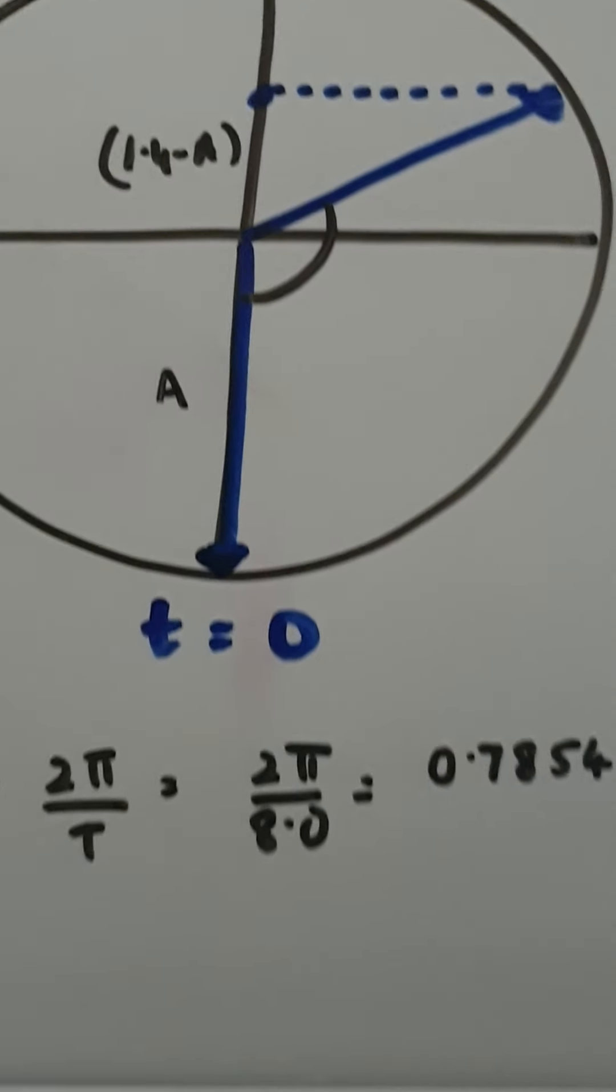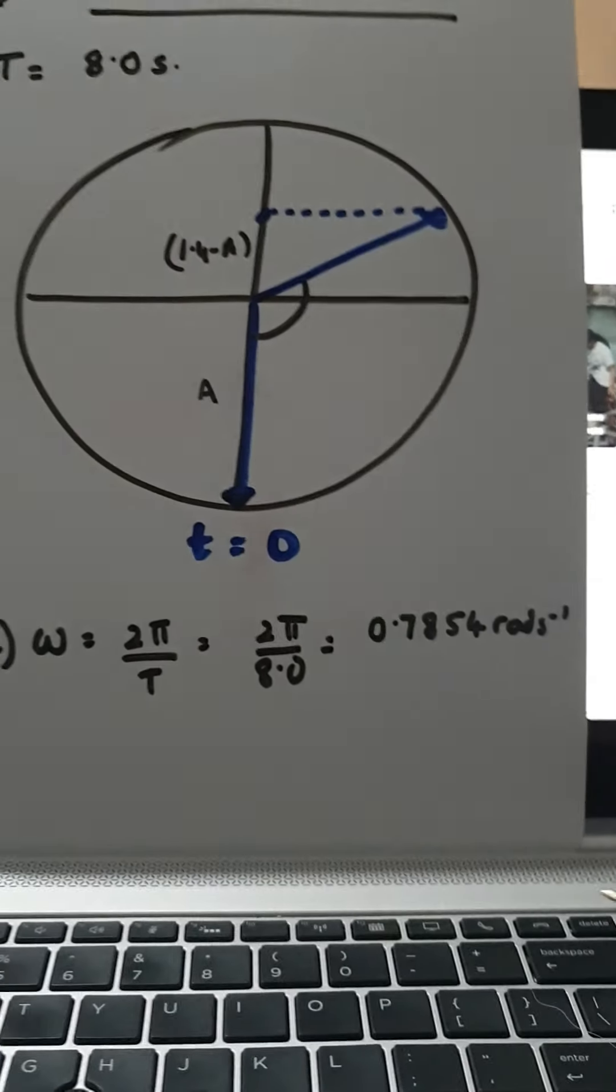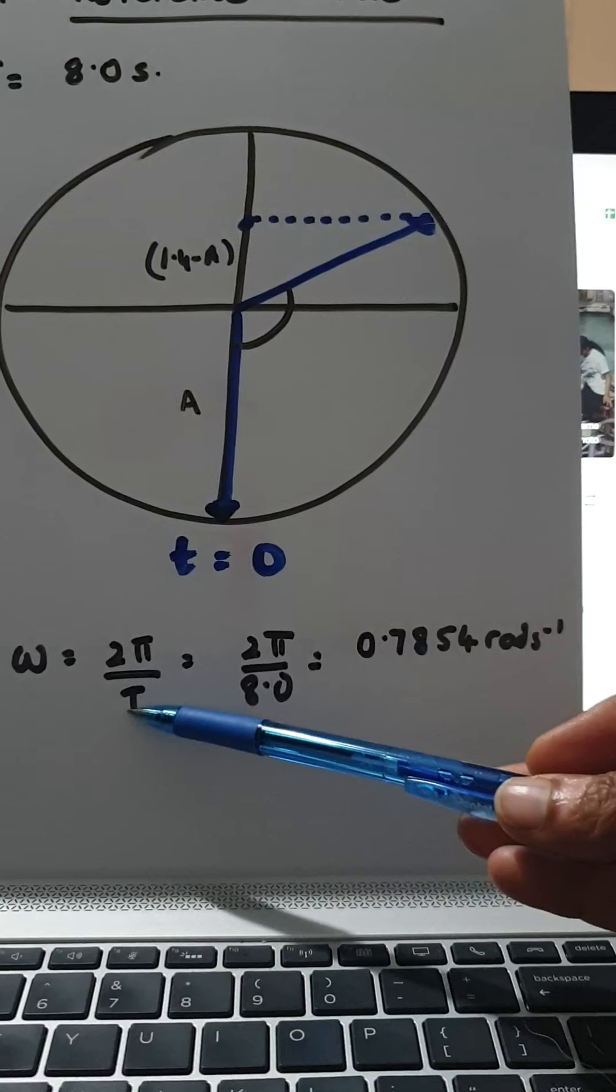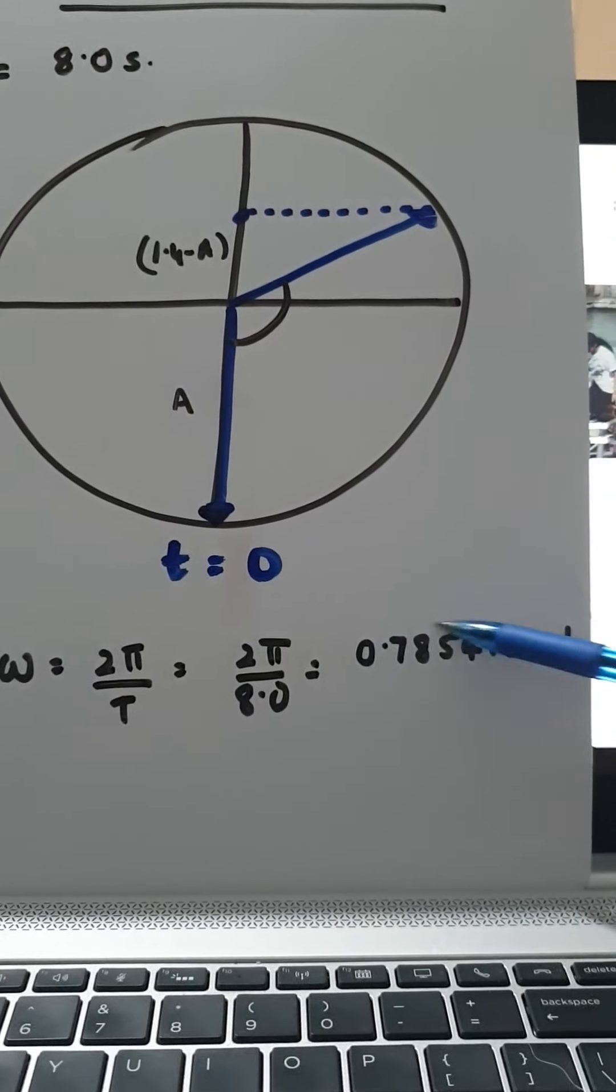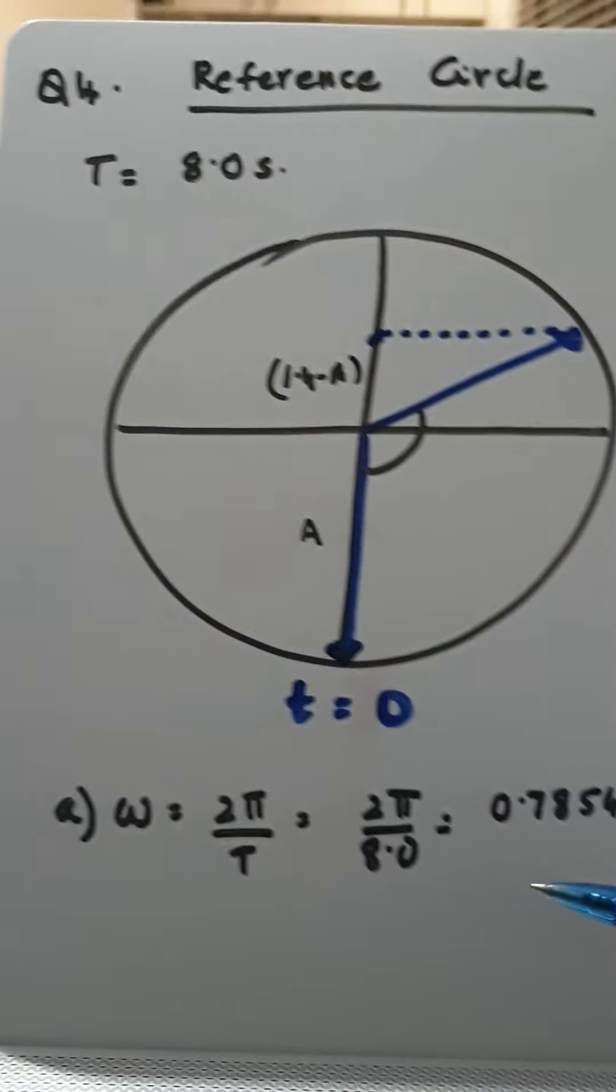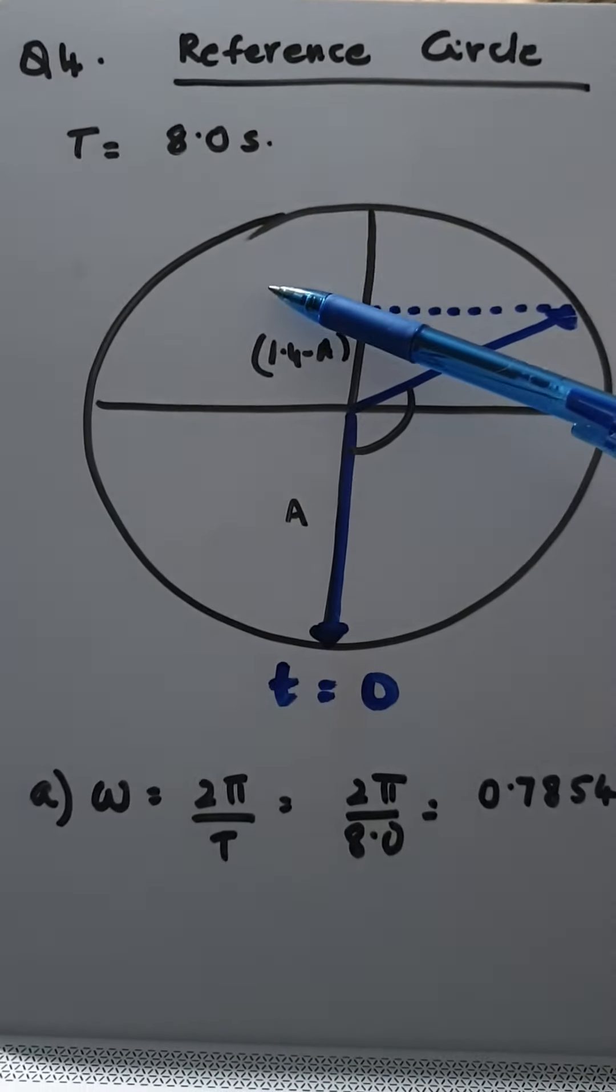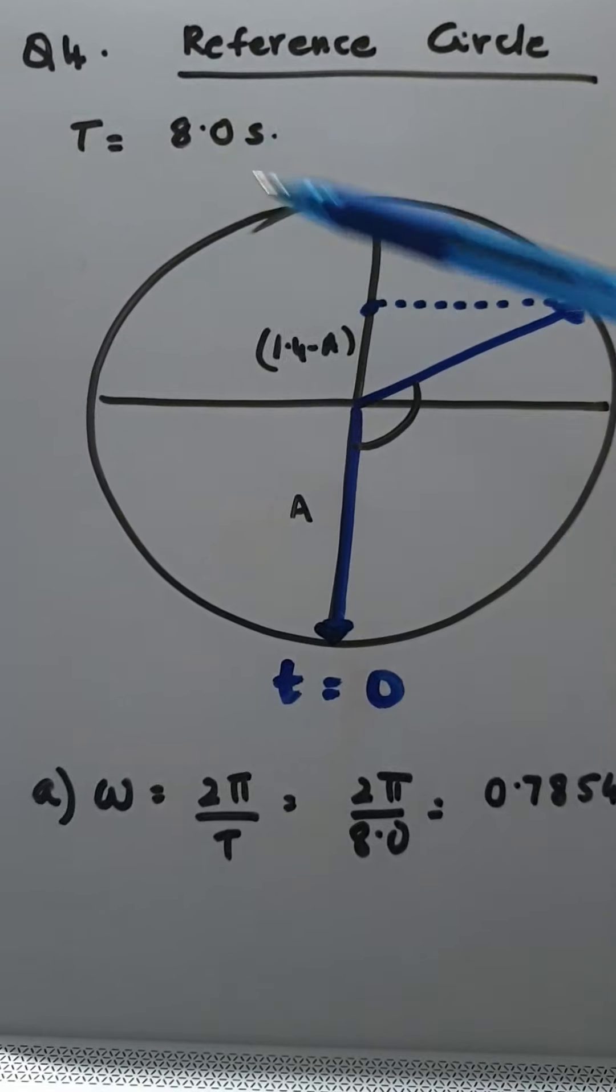So I've just drawn it out for you on here. So the first thing is to calculate the angular frequency so omega is 2π over t and you end up with this number. So over here I've just written what the period is, 8 seconds.